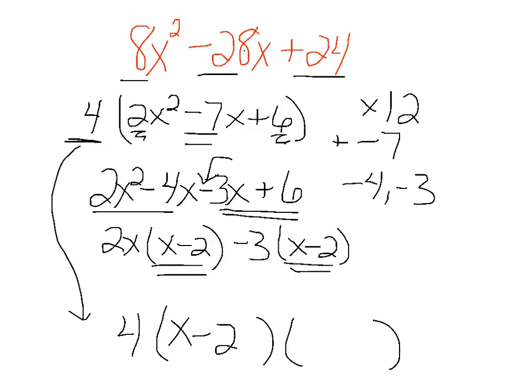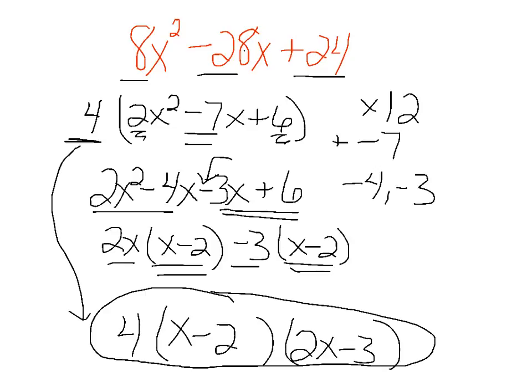So that x minus 2 is one of my factors, and the 2x minus 3 remains. So I have my two binomials plus my constant, and I have a perfect factored form.